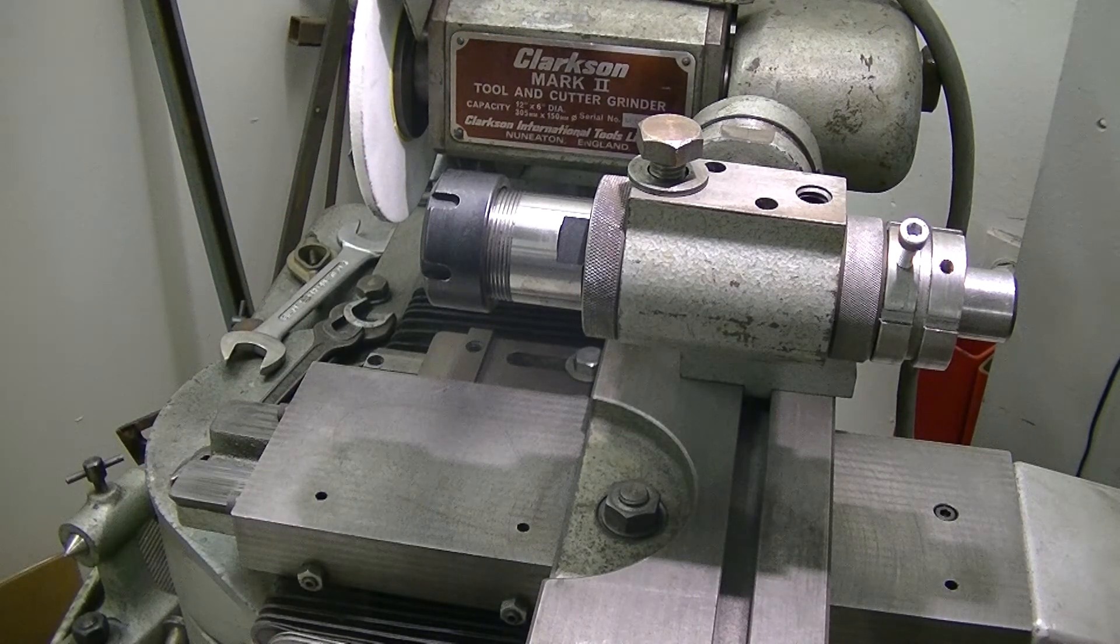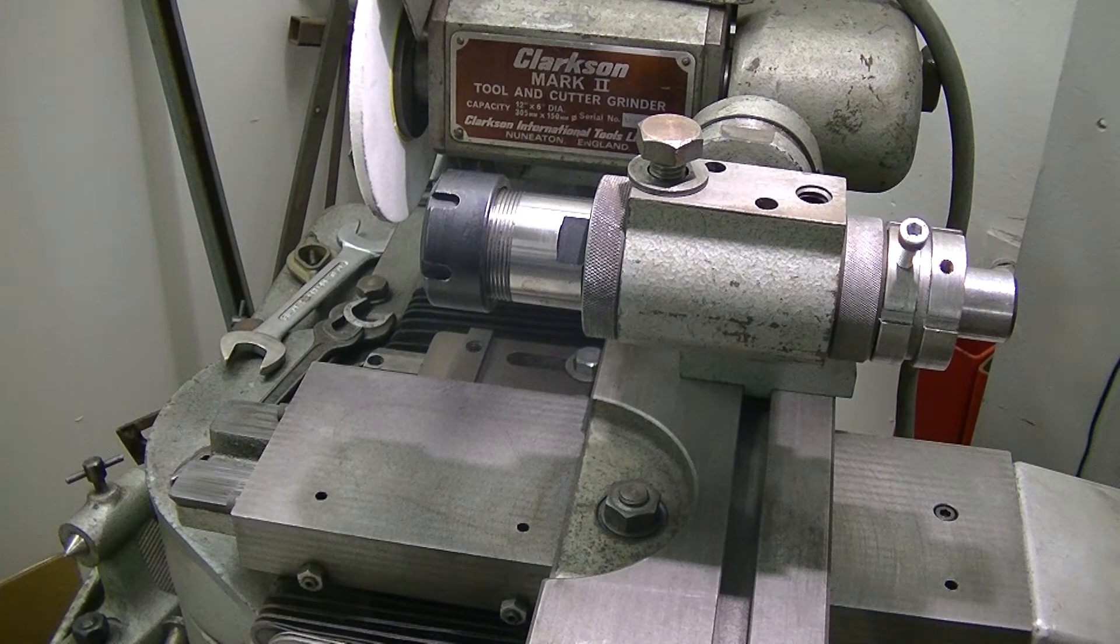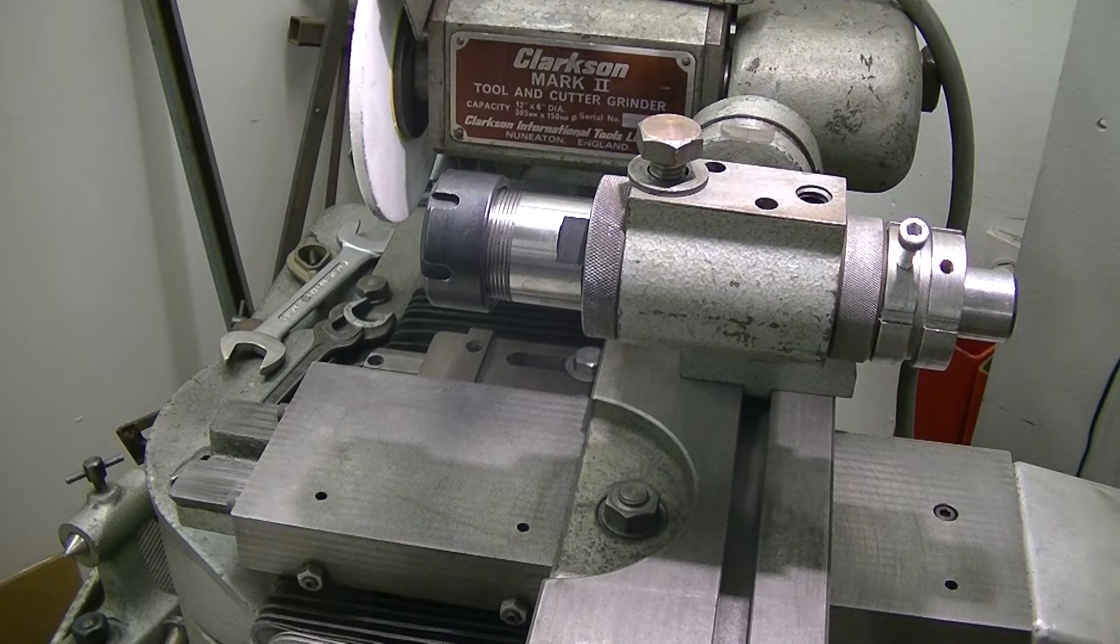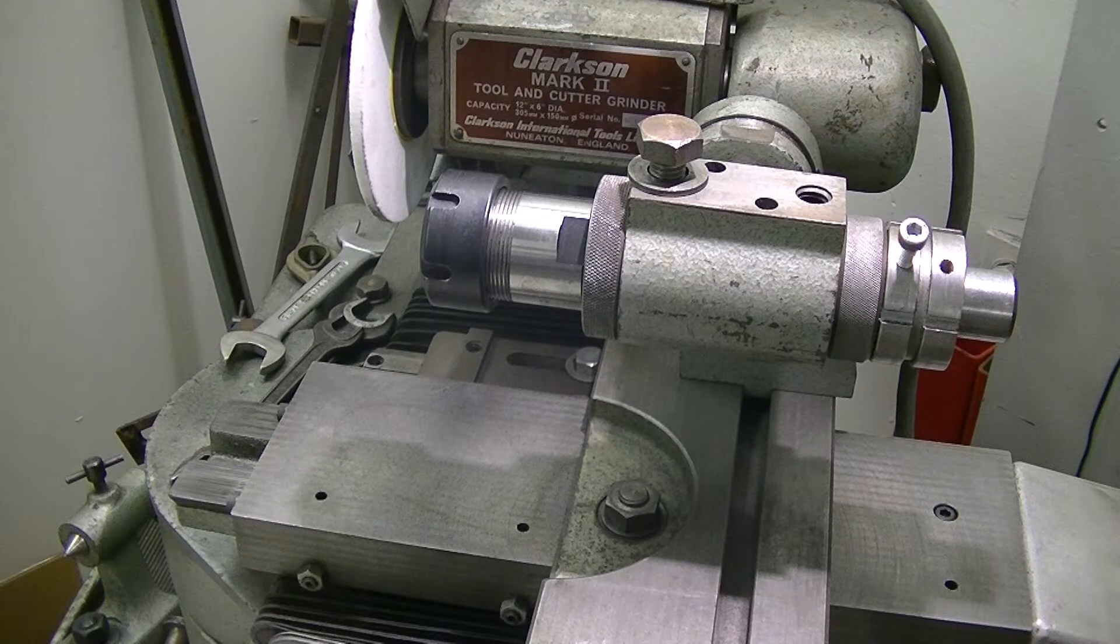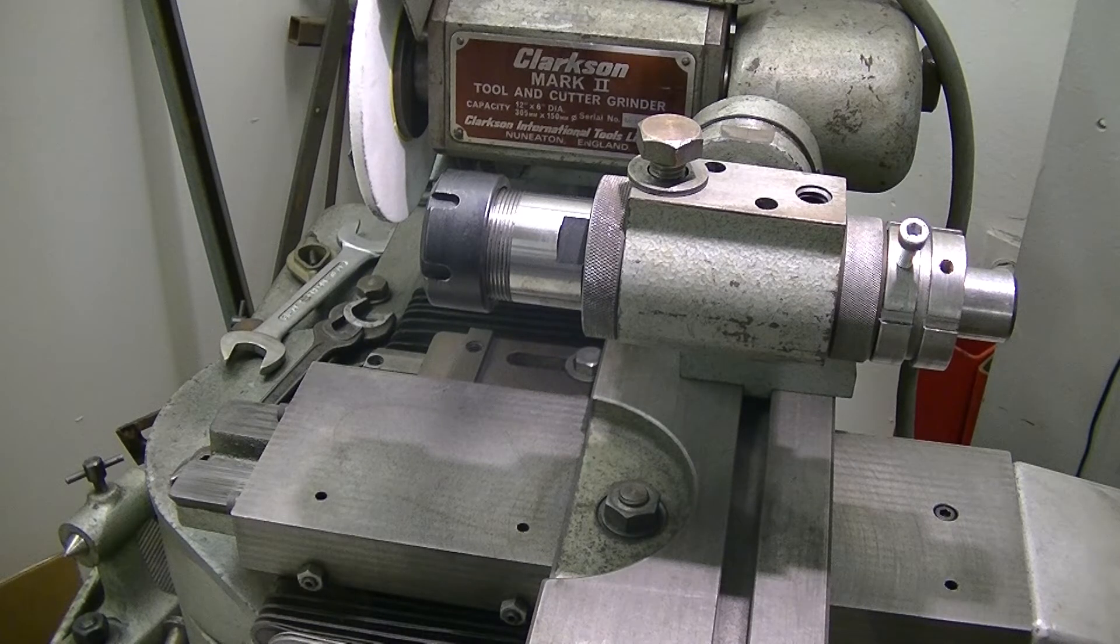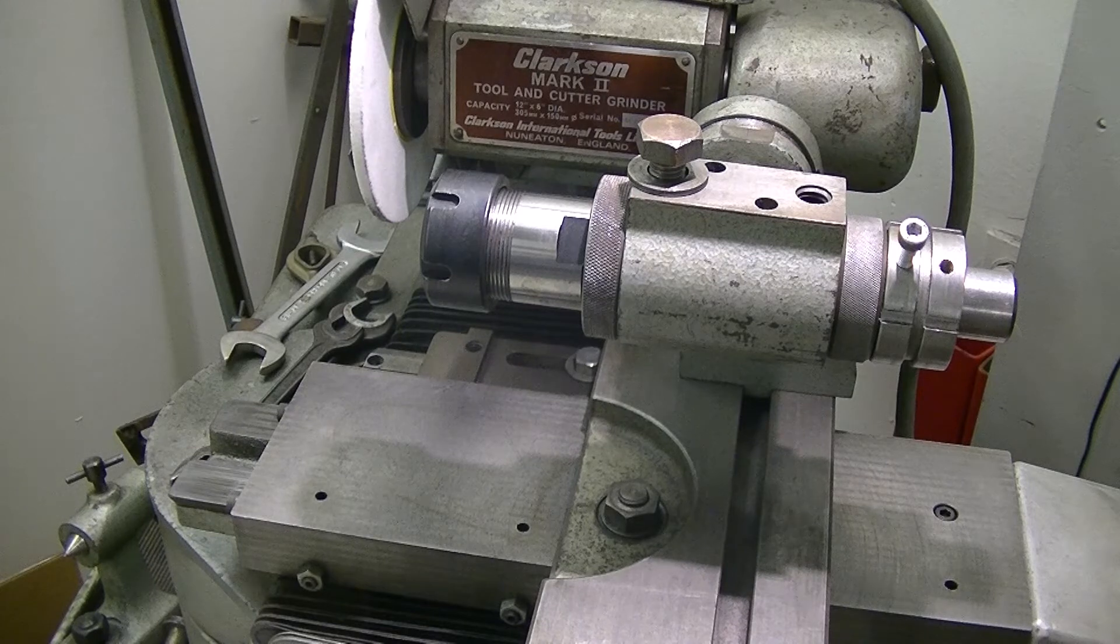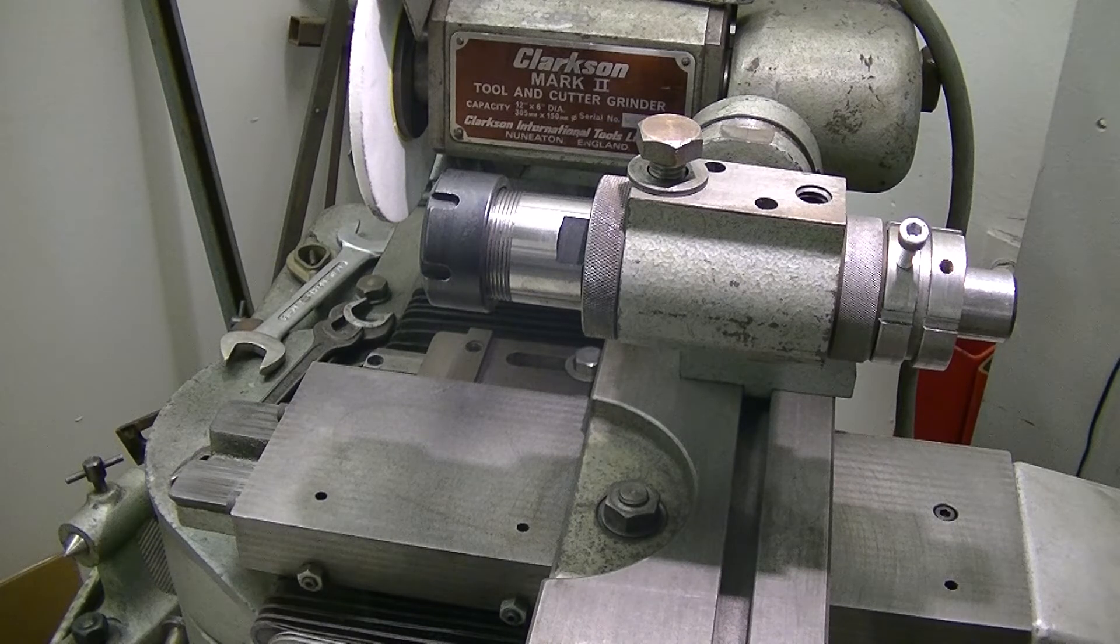It comes with a couple of different brackets and there are several accessories. If you get online to a site called the Bedroom Workshop, the fellow has over 300 pages of information on the Clarkson and a lot of it is homemade attachments and it is a really good place to get tool and cutter grinder info. Okay, I'll move you around to the table now.